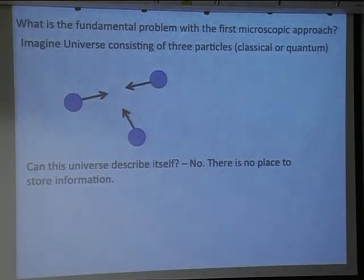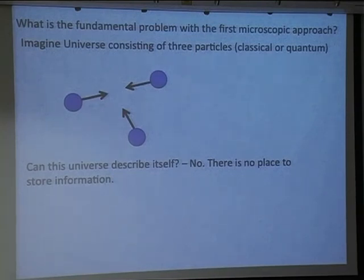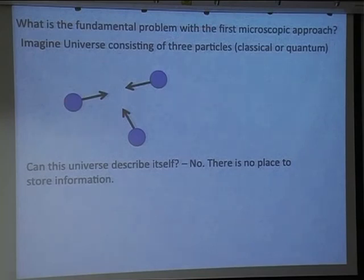Chaos makes microscopic simulation problematic. At school we were told this works 'in principle' — if we could solve 10^50 equations we'd get full information. But let me argue that this 'in principle' is actually fundamentally flawed. Imagine you don't have the universe to begin with — you start building it particle by particle. With just three particles, can this universe describe itself? Obviously no — you cannot even store the information.